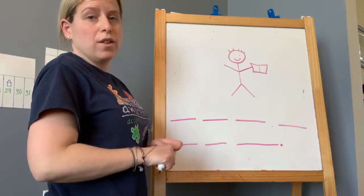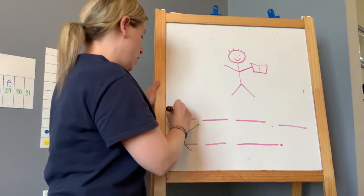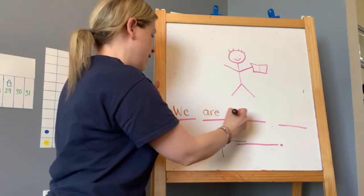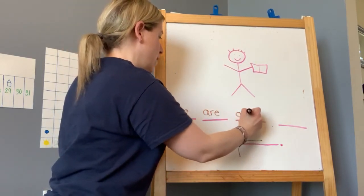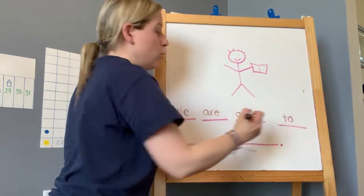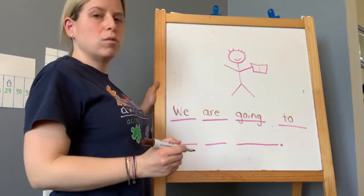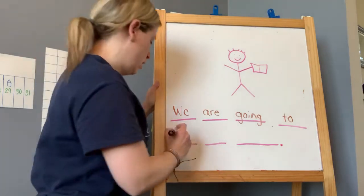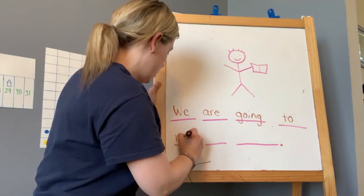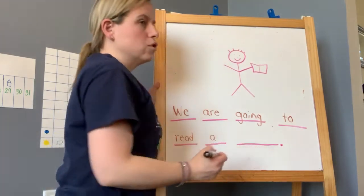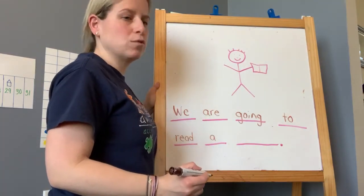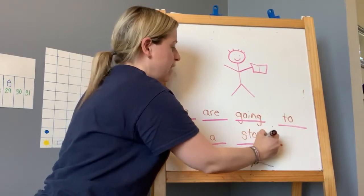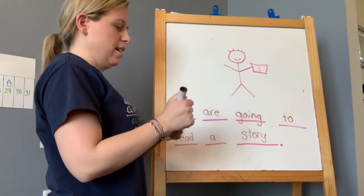Now that we have enough lines, we can write our words. We are going to read. What letter does read begin with? R, R, R, read. A story. Story, all right, begins with S. Excelente!